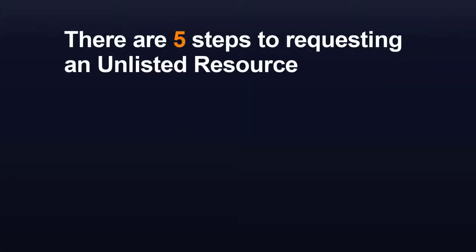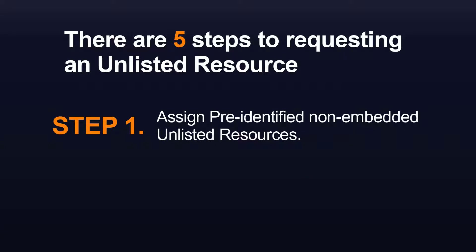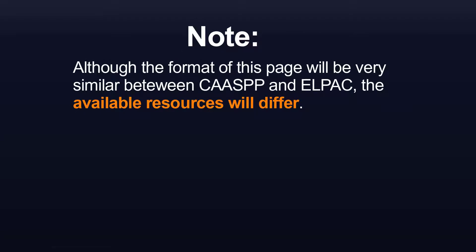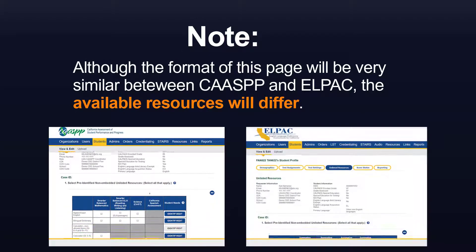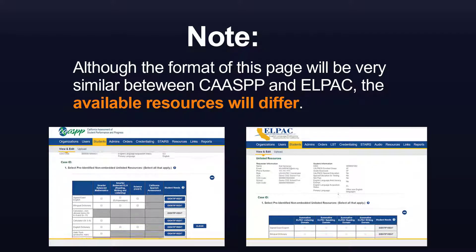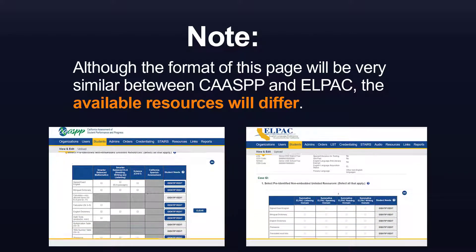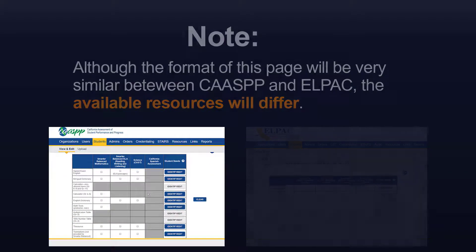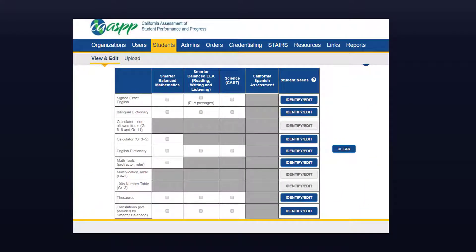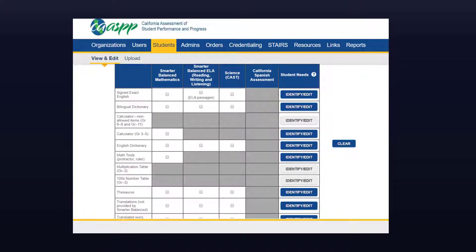There are five steps to requesting an unlisted resource for a student. Step 1 focuses on assigning pre-identified, non-embedded unlisted resources. These unlisted resources have been previously approved by the CDE. Note, although the format of this page will be very similar between CAASPP and the ELPAC, the available unlisted resources will differ. Here's what the CAASPP page will look like. Again, for this tutorial, we're focusing on the ELPAC experience.